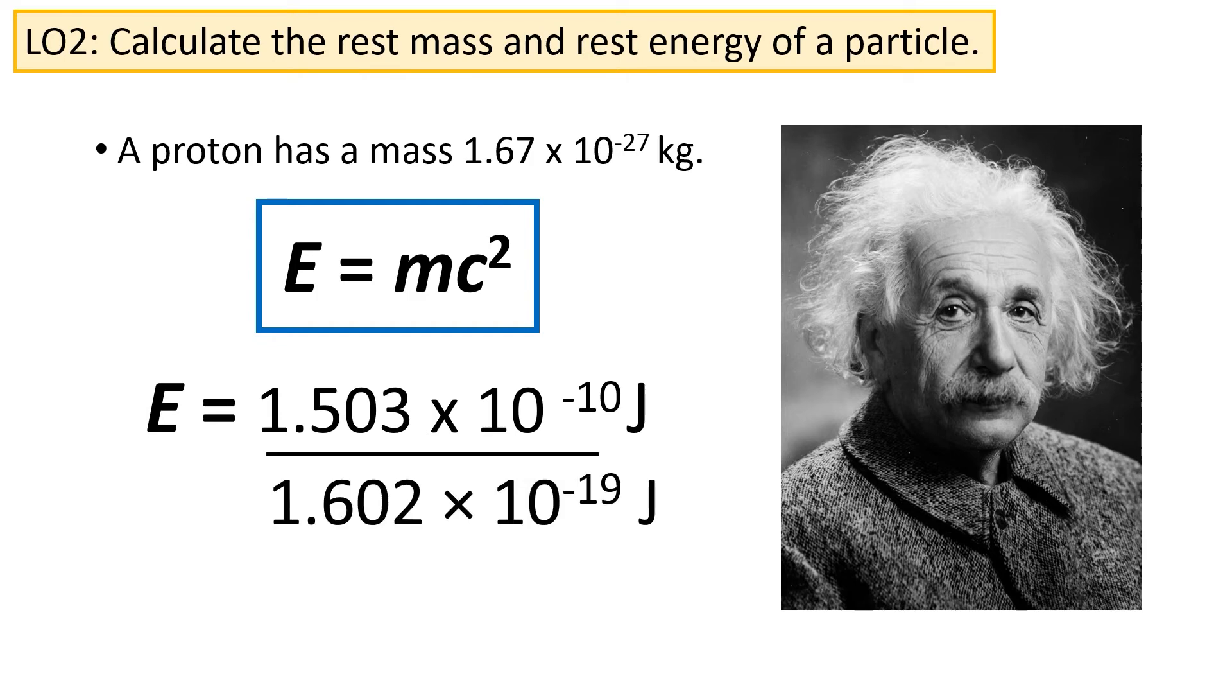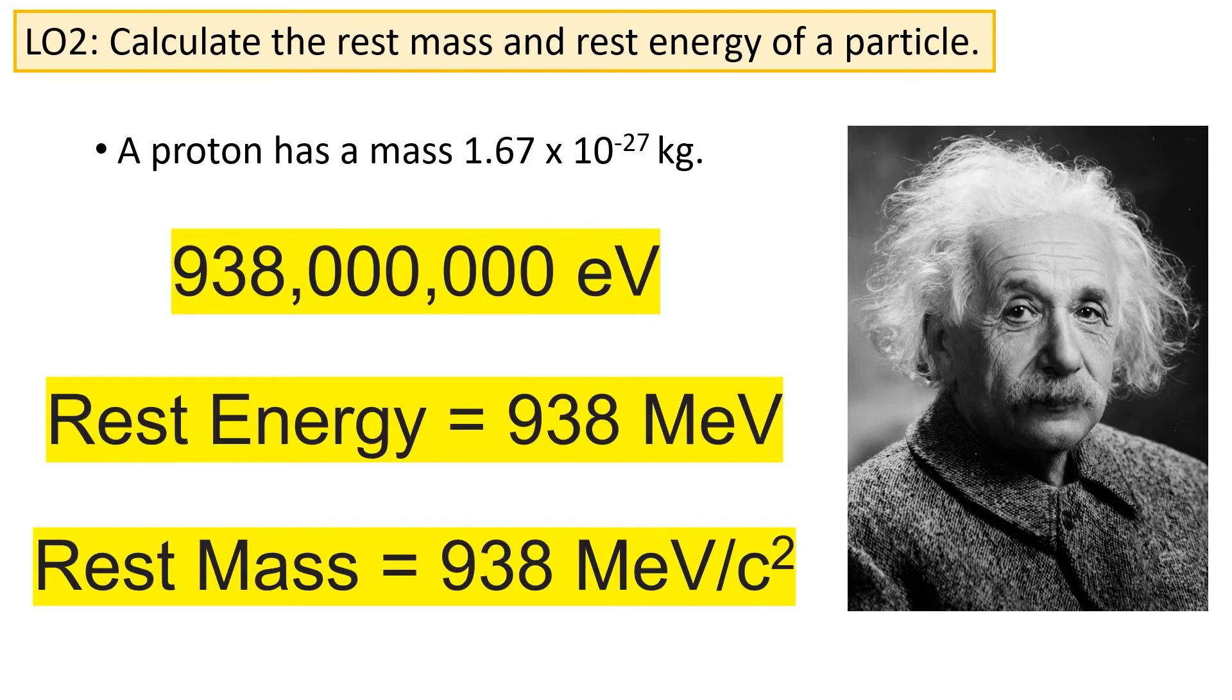Converting this into electron volts, we get that the rest energy of a proton is 938 million electron volts. So the rest energy of a proton is 938 mega electron volts. Equivalently, we also state that the rest mass of a proton is 938 mega electron volts per c squared, where c squared has been taken into the unit. I'll leave this as an exercise for the viewer to work out why this is the case.